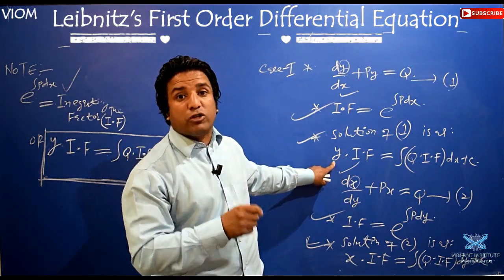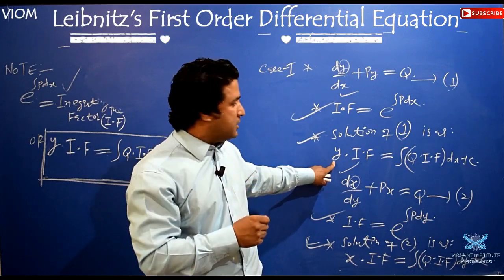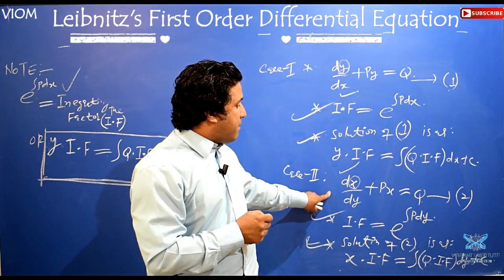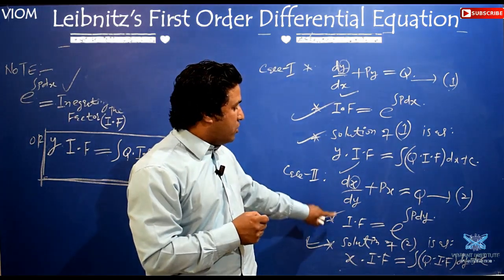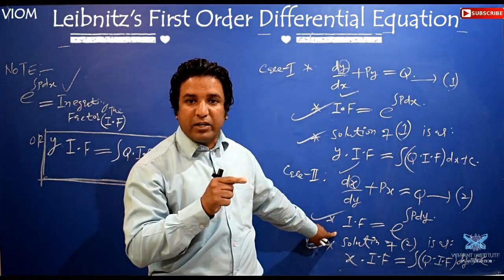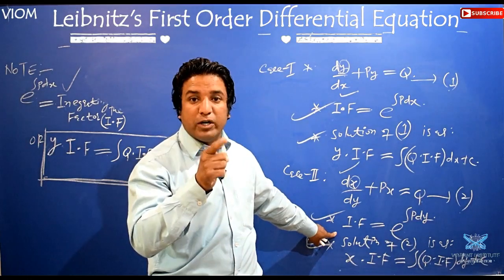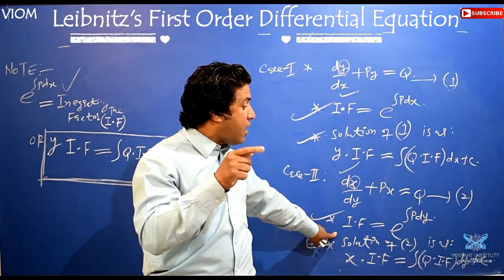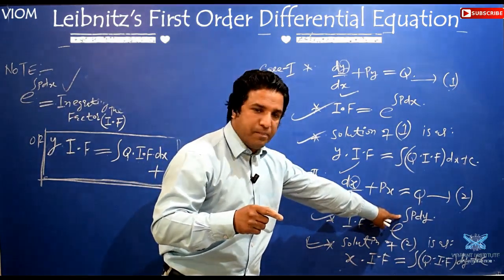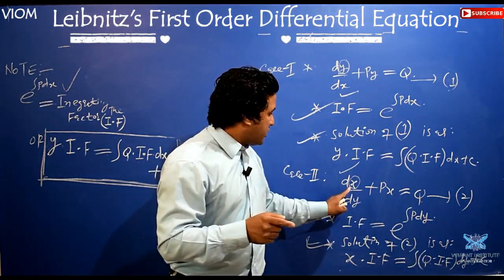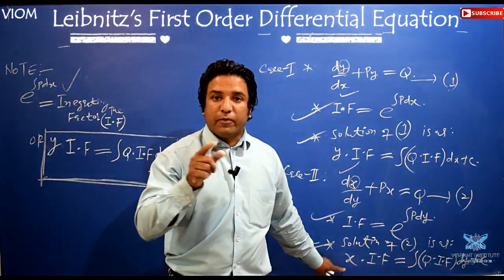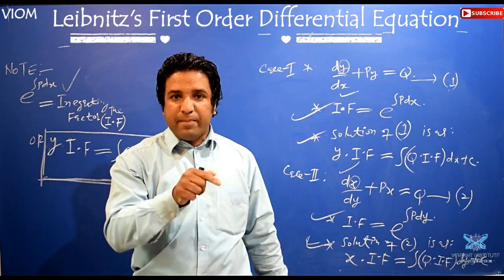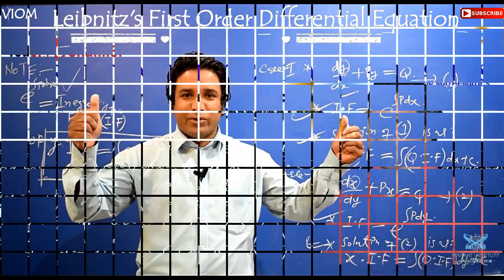Case 2: the differential equation may be of the form dx/dy plus Px equals capital Q. For this case, the integrating factor I.F. equals e raised to the power of integral of P dy, and the solution is x times the integrating factor equals the integral of Q times the integrating factor dy plus C.